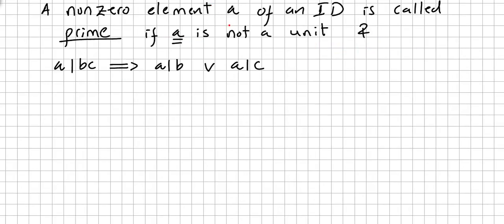A non-zero element A of an integral domain is called a prime in an integral domain. The concept here is a bit different. A is prime if A is not a unit and if A divides BC, then either A divides B or A divides C.